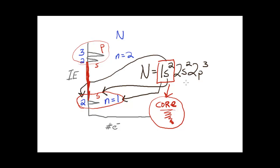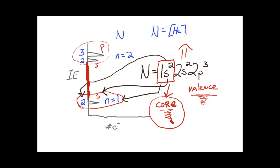Because the core electrons spend so much time closer to the nucleus, they are not particularly accessible to interact with other atoms in the formation of covalent bonds, so they are not something we need to consider when explaining the number of bonds nitrogen forms. These other electrons are referred to as valence electrons. They spend much more time further away from the nucleus and are accessible to other atoms to form covalent bonds. I'll rewrite this using shorthand notation, representing the core electrons with the noble gas symbol helium — which has a filled n equals one shell — and then writing the valence electron subshell information: [He] 2s²2p³.